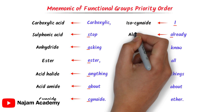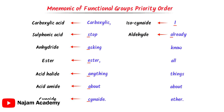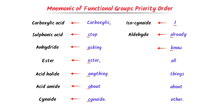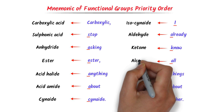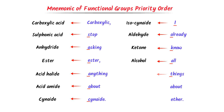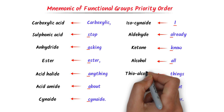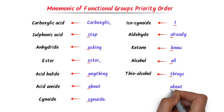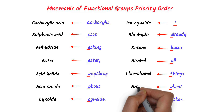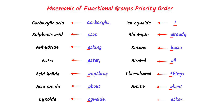This A stands for aldehyde. This K stands for ketone. This A stands for alcohol. This T stands for thio alcohol. This A stands for amine. And ether stands for ether.